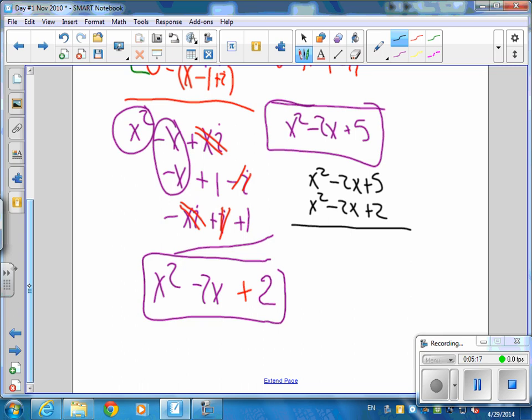And I'll do it here real quick. This is just going to be x to the 4th minus 2x cubed plus 2x squared. Then it will be minus 2x cubed plus 4x minus 4x.